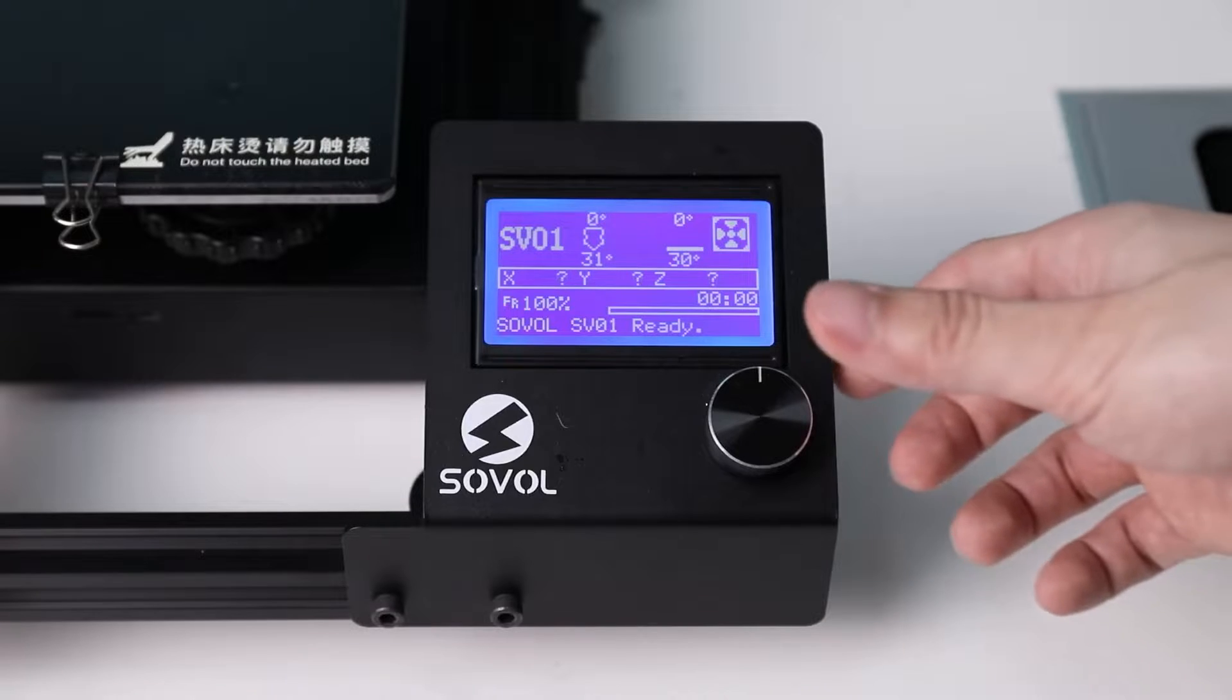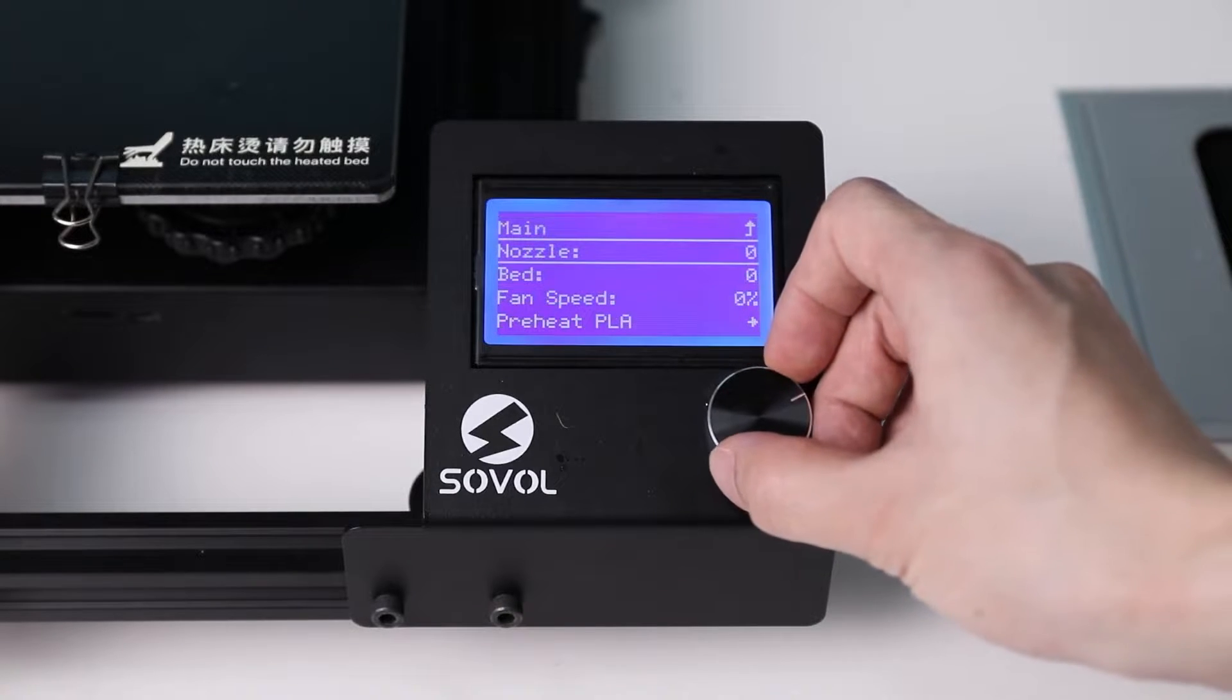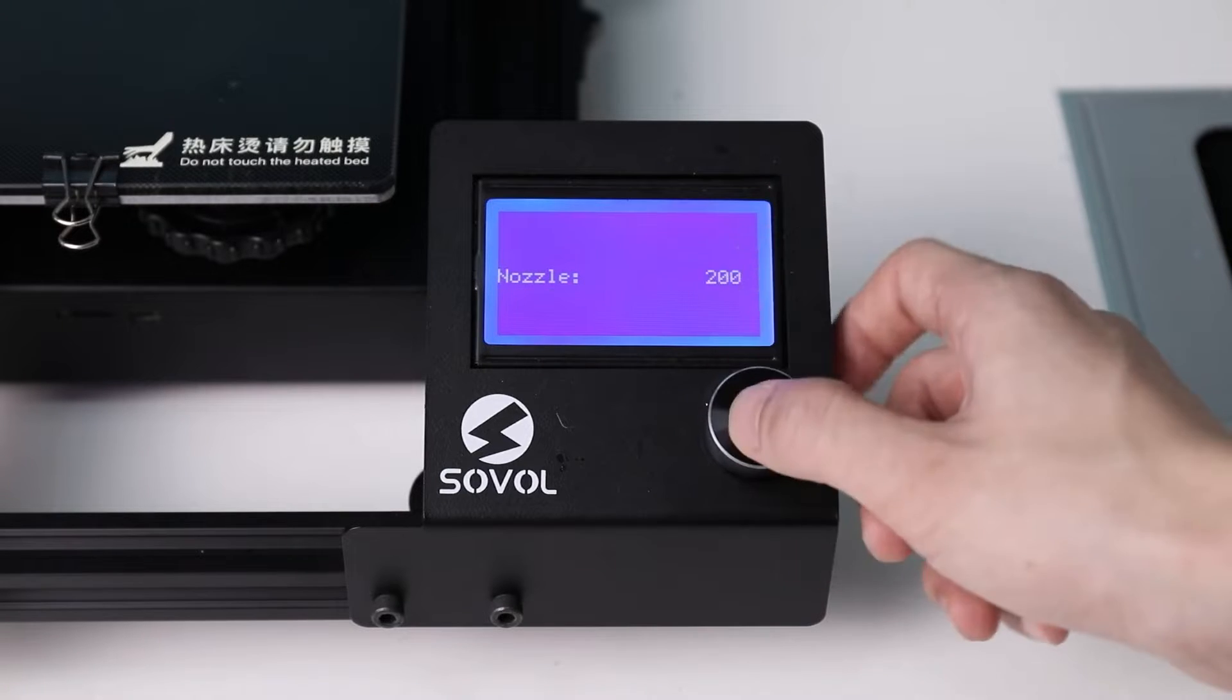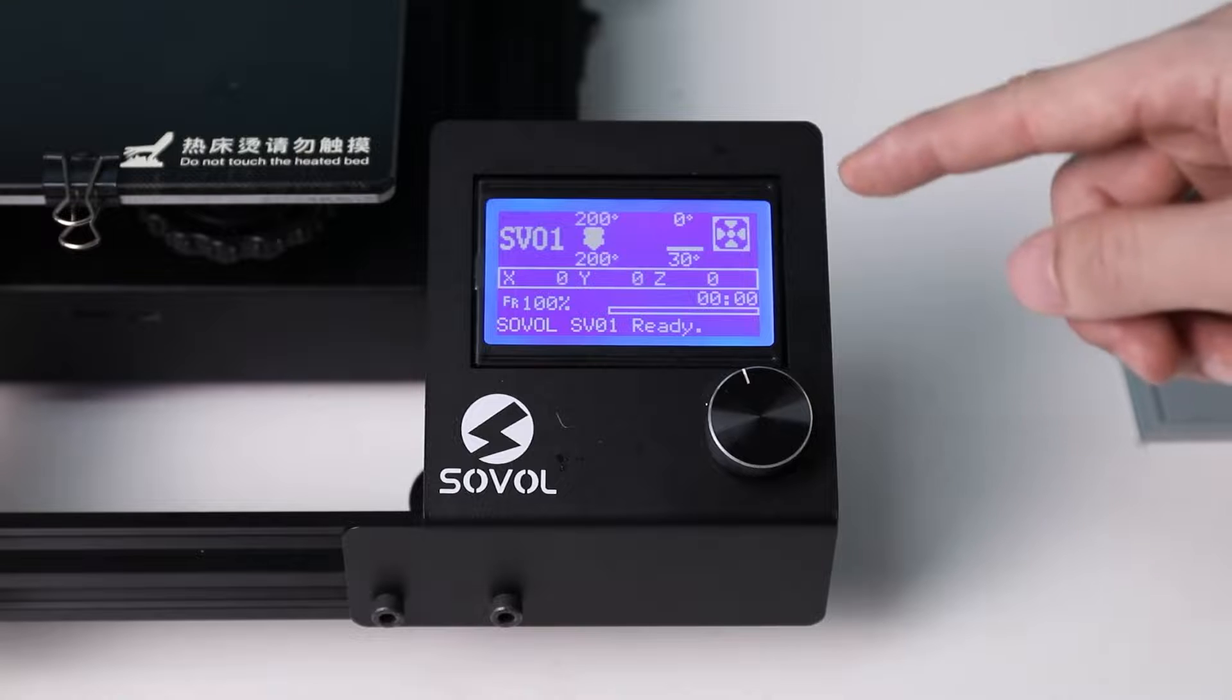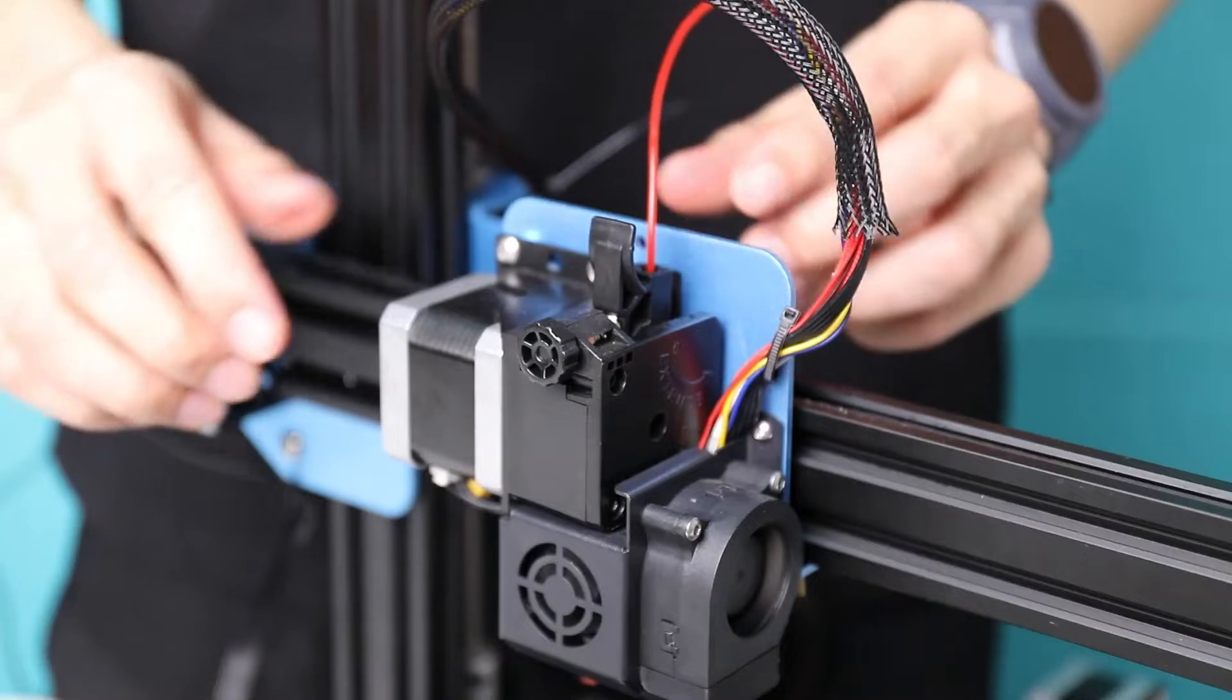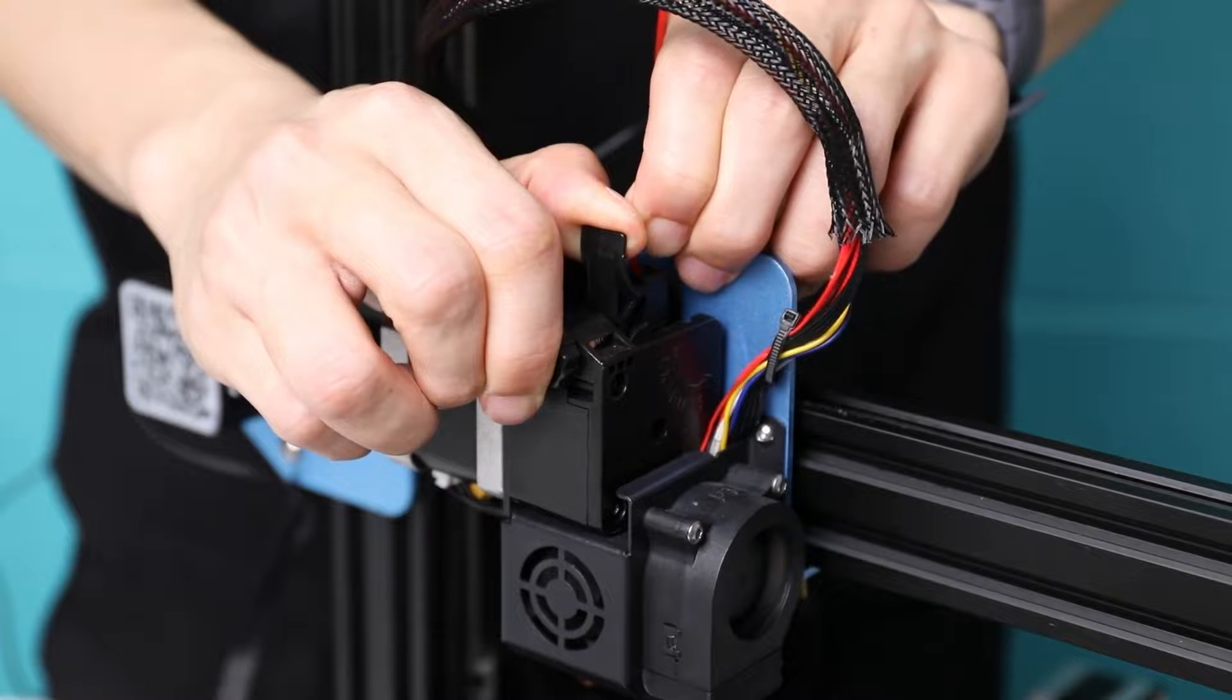Let's start with heating up the nozzle to unload the filament. Set the temperature to 200 Celsius degrees. Now the nozzle is reaching 200 degrees Celsius. Let's pull out the filament. Press the load lever, push a little bit more filament through the extruder, and then pull out.